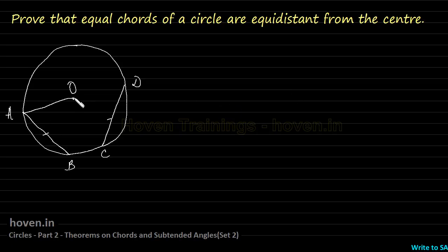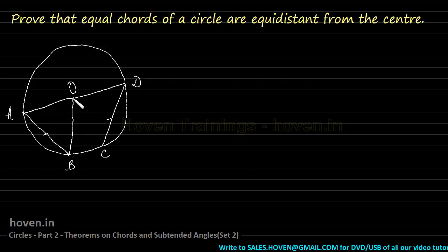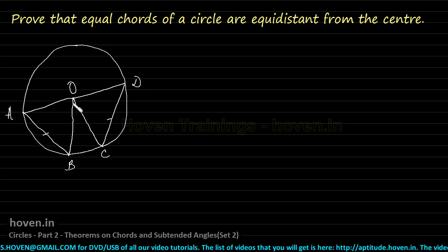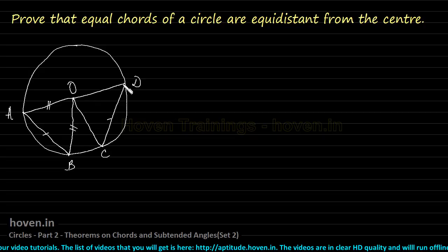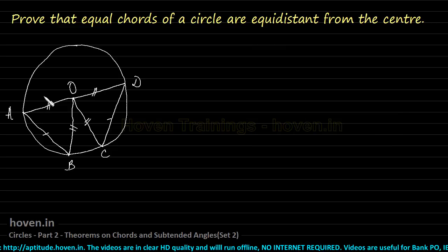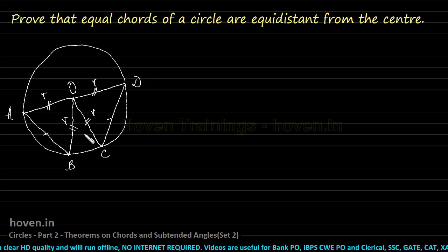Join A to O and B to O to form triangle AOB. Similarly, join O to D and O to C to form a second triangle OCD. In these two triangles, OA is a radius and OB is also a radius, so we can mark them equal. Similarly, OD and OC are also radii. Let us mark all four with R so that we are clear that all four are equal to each other.